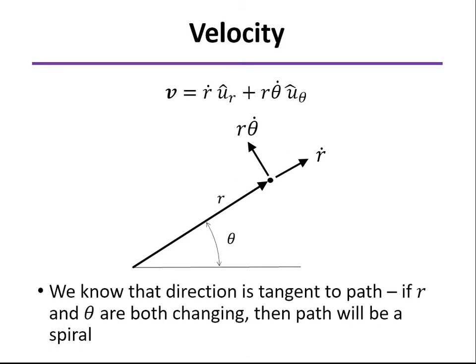Both r and theta are going to be changing. If that's the case, then your path will not be circular, but rather will be a spiral.